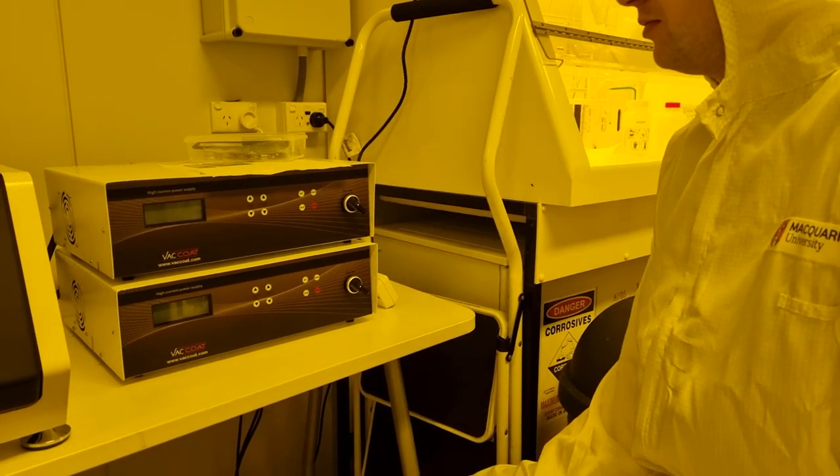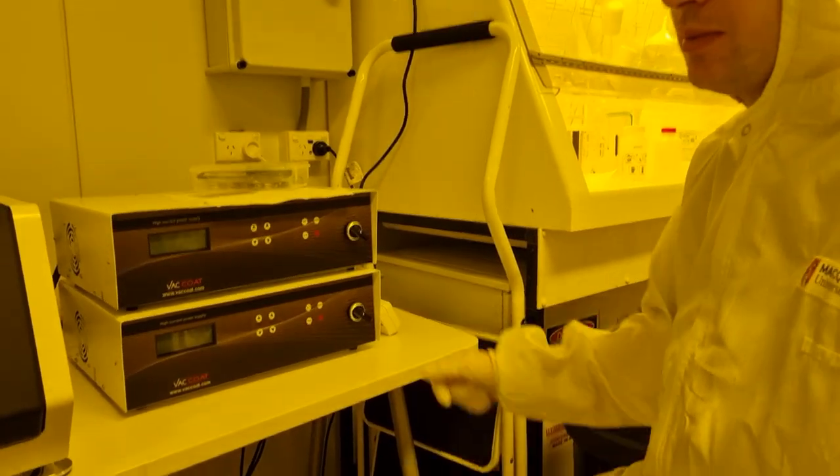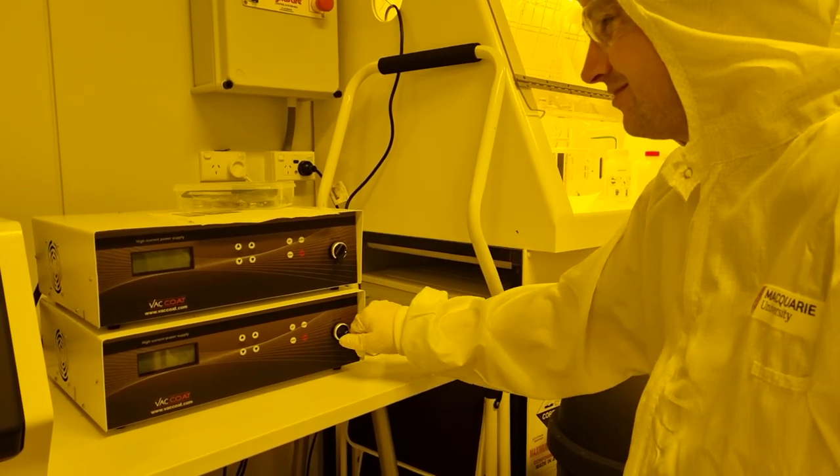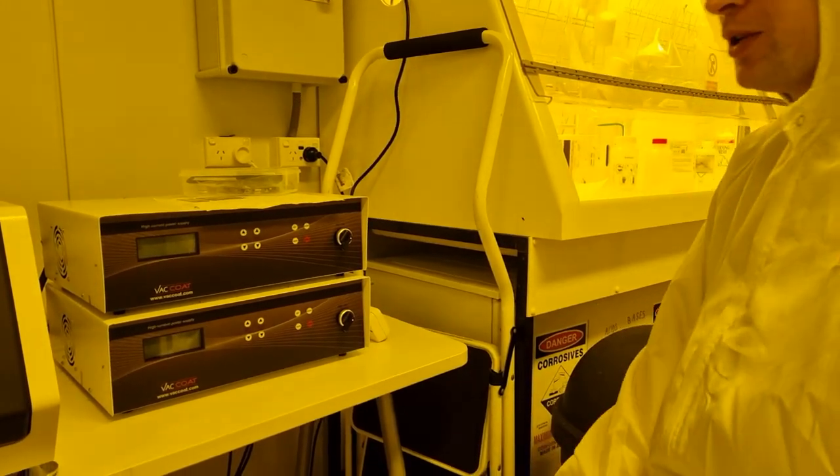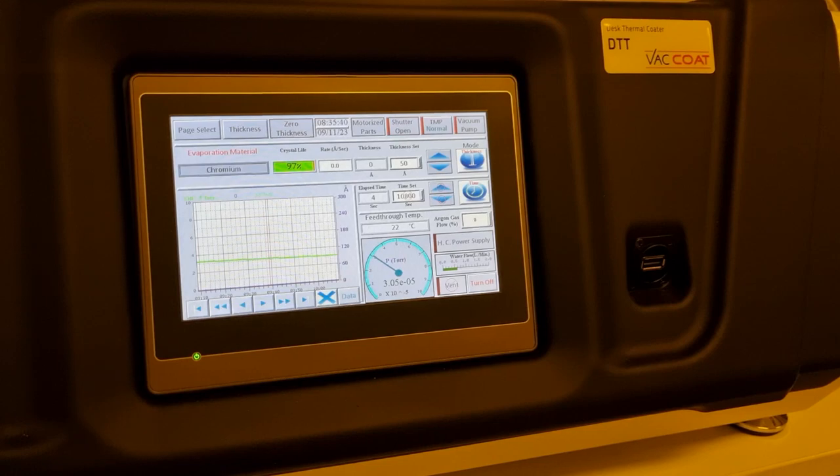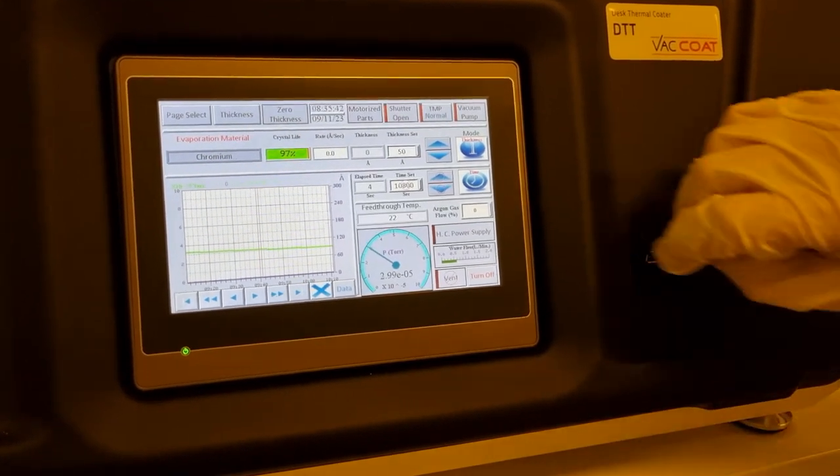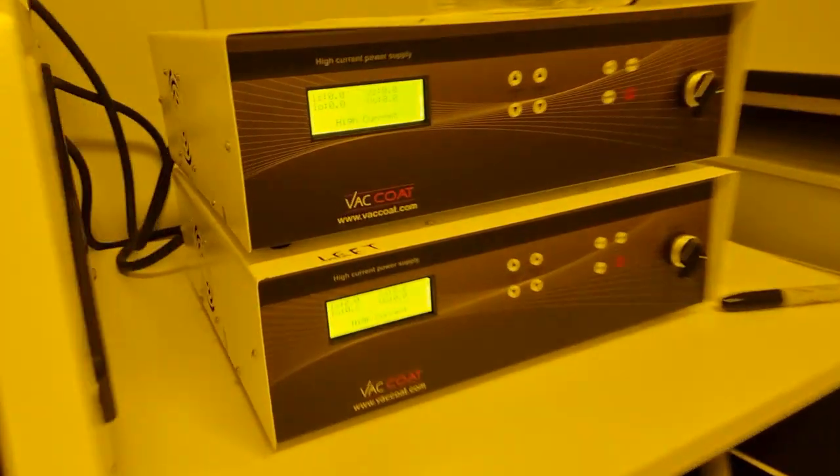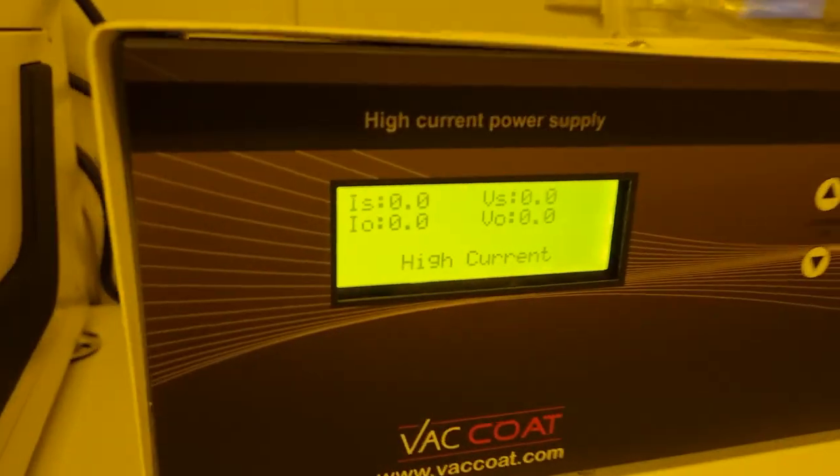Now's a good time to turn on the high current power supplies using these big chunky switches on the right. This will allow the controller on the left to have control over the power supplies. Pressing the HC power supply button on the display will energize the two power supplies on the right. Current won't start to flow until we press the start button.